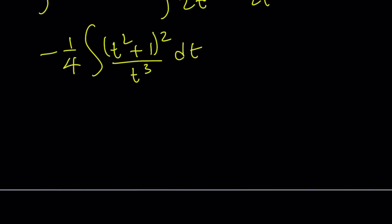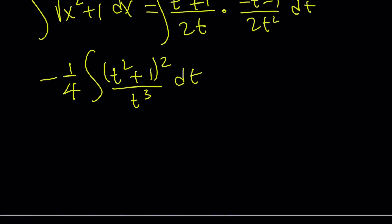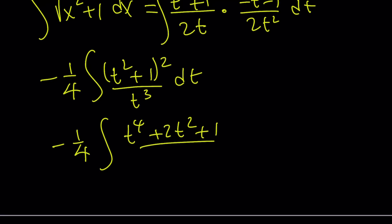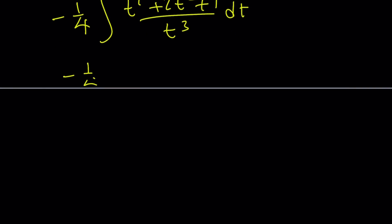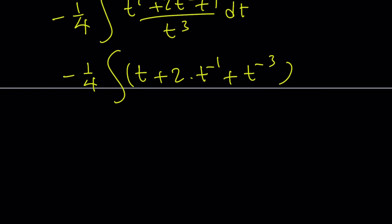We're going to go ahead and separate the terms: t⁴/t³ = t, 2t²/t³ = 2t⁻¹, and 1/t³ = t⁻³. This is very easy to integrate using power rules.